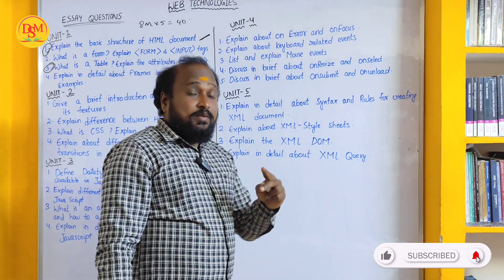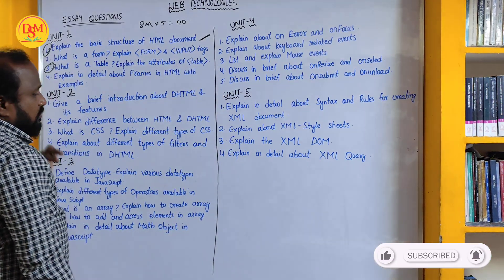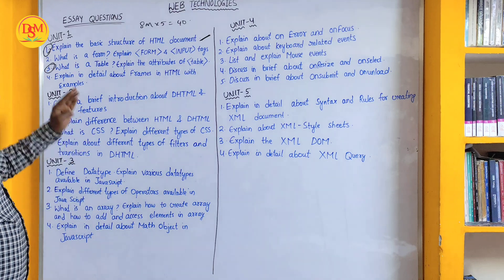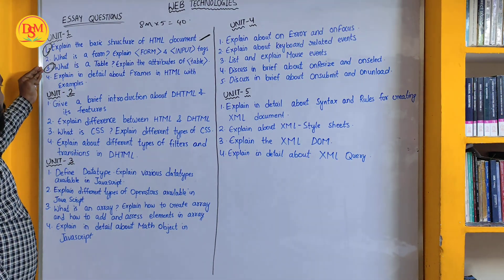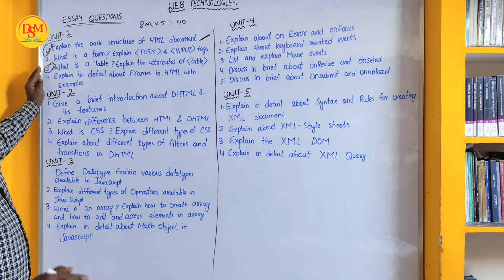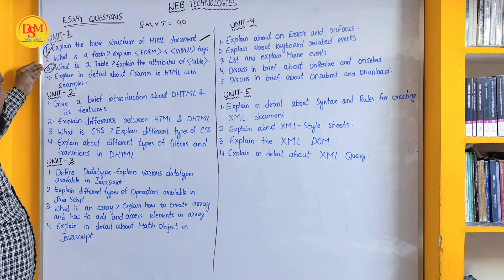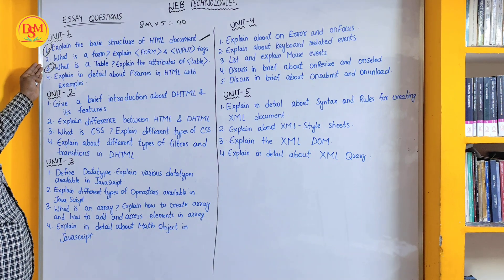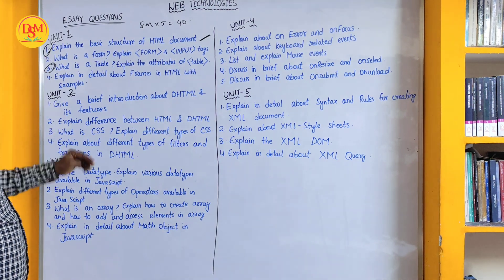The remaining questions you can learn if you don't want to take any risk. Learning the first two or three questions is sufficient, because in the exam you have to write only one question. You can go in a preferential order and choose any of the two questions. Moving to Unit 2.